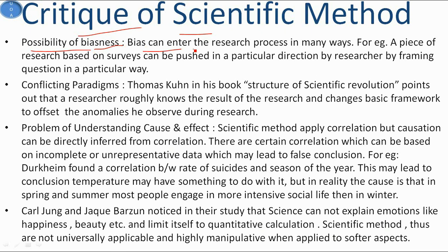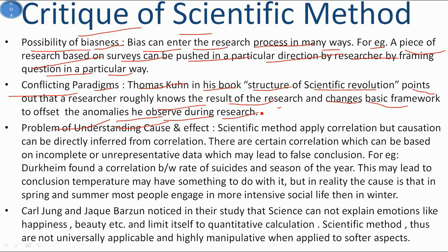Now we look at the critiques of scientific method. First, there is the possibility of bias, as bias can enter the research process in many ways — for example, a survey-based piece of research can be pushed in a particular direction by framing questions in a specific way. Second, conflicting paradigms: Thomas Kuhn in 'The Structure of Scientific Revolutions' points out that a researcher roughly knows the result of research and changes the basic framework to offset anomalies observed. Third, there is the problem of understanding cause and effect — scientific method applies correlation, but causation cannot be directly inferred from correlation.